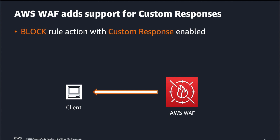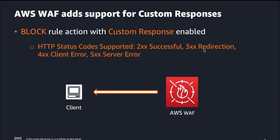Previously, AWS WAF could only return HTTP status code 403 Forbidden when the user request was blocked. With this custom responses support feature, you can configure AWS WAF to send a different HTTP status code, such as 2XX for successful, 3XX for redirects, 4XX for client errors, or 5XX for server errors. These codes can be used to redirect users to different parts of your application or provide users a specific response code based on the reason they were blocked.